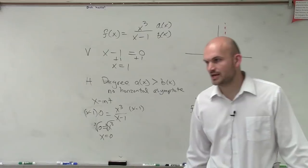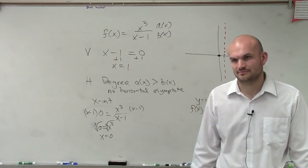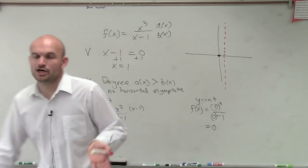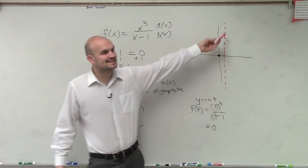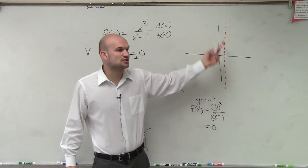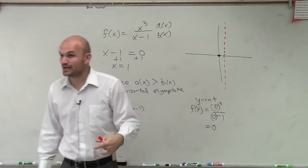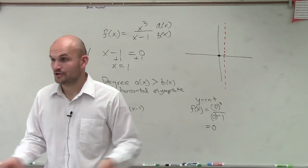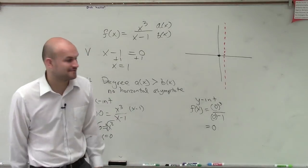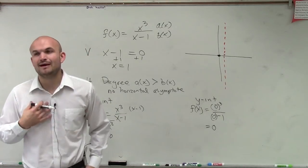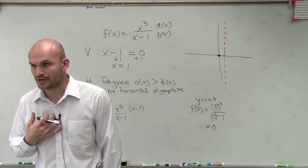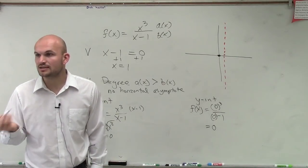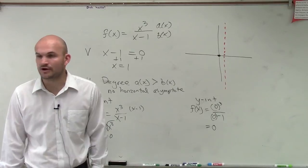Has this helped us graph the function yet? No. All we know right now is that our graph approaches this vertical asymptote line — we have no idea what the shape of the graph is. Even if you have a graphing calculator, I'm still going to ask you to verify two points to the left and two points to the right of your asymptote.